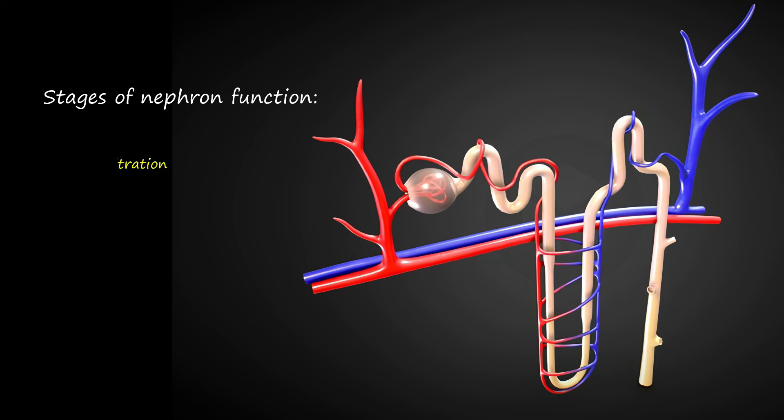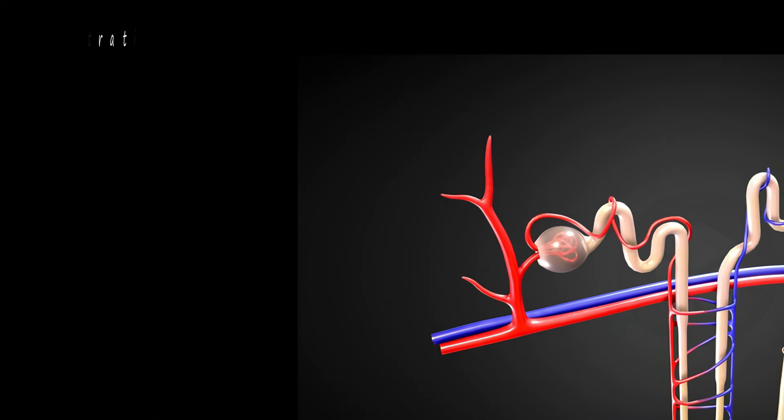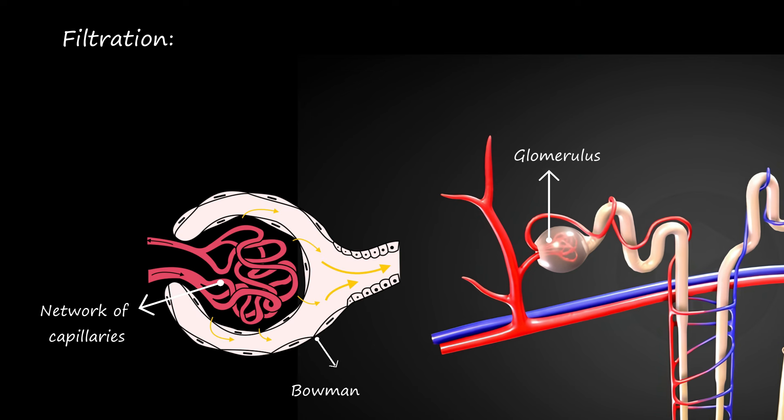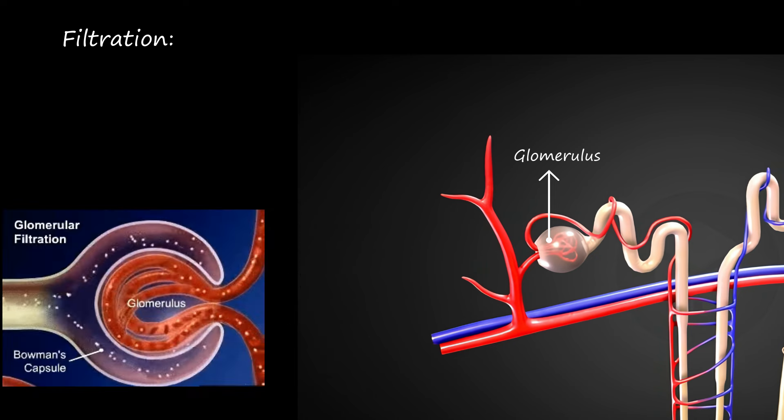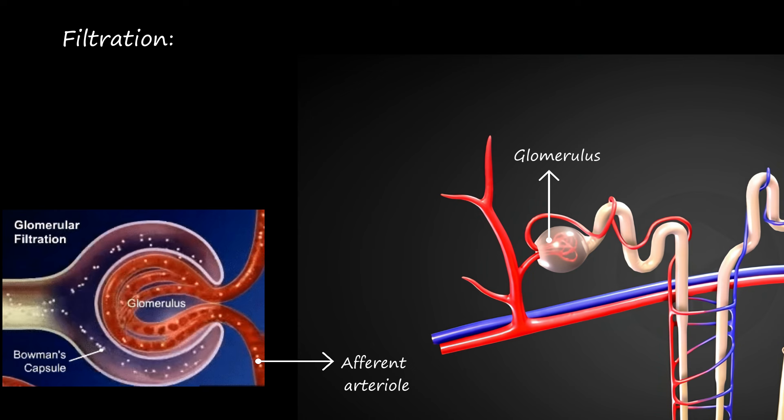Below are the stages of nephron function. The first stage is filtration occurring in the glomerulus, a network of capillaries surrounded by Bowman's capsule. Blood enters the glomerulus through the afferent arteriole and leaves via the efferent arteriole.